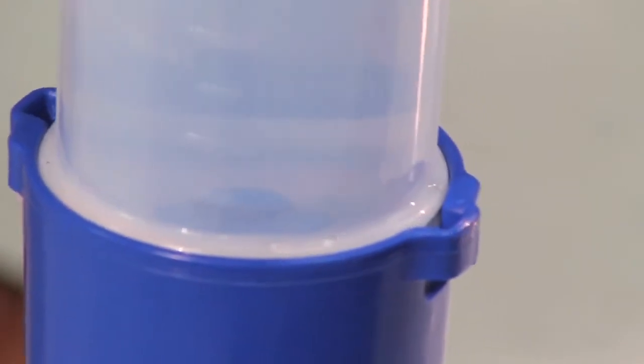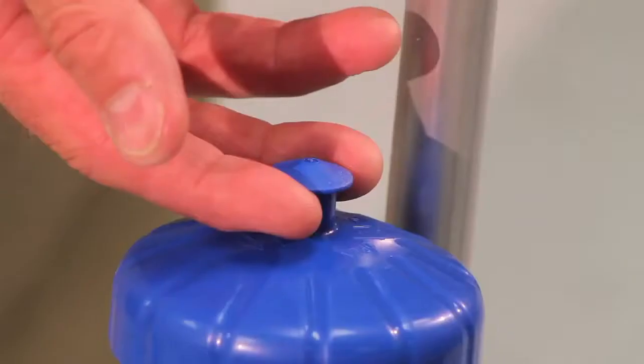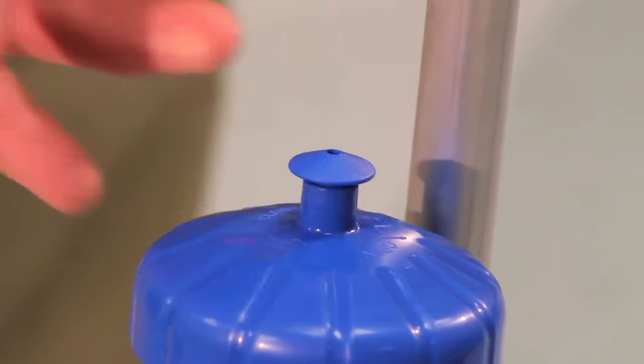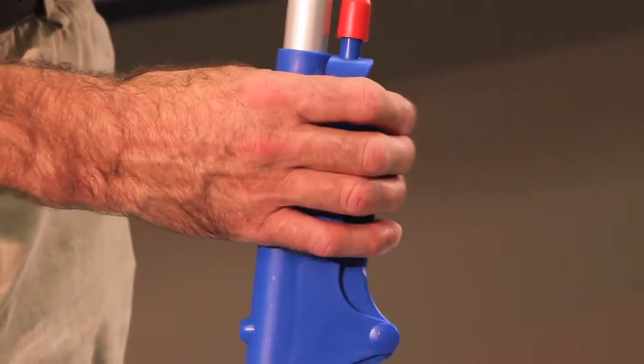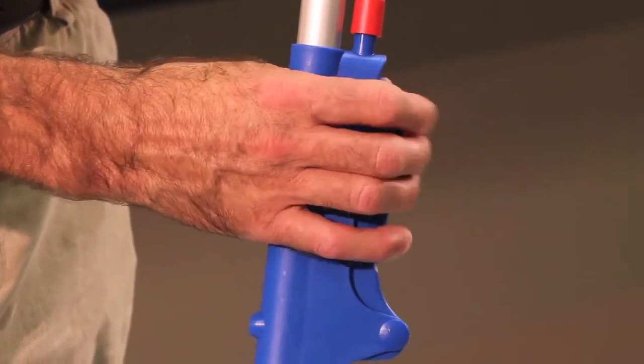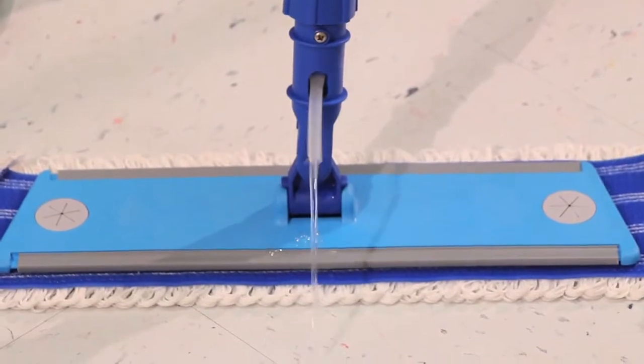In order for the solution to dispense, be sure to vent the bottle by pulling up on the spout on top of the lid. Squeeze the grip which opens the tube at the bottom of the mop and the solution will drip in front of the leading edge of the mop, charging it as you go.